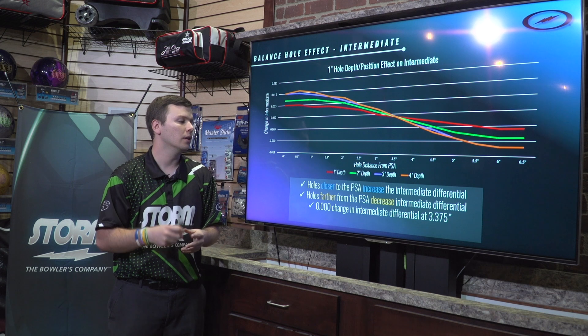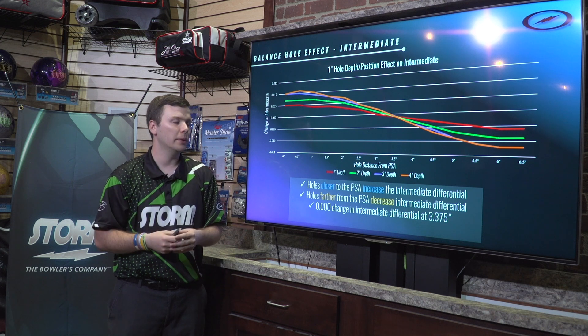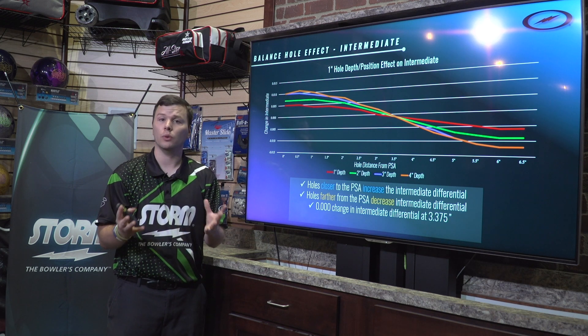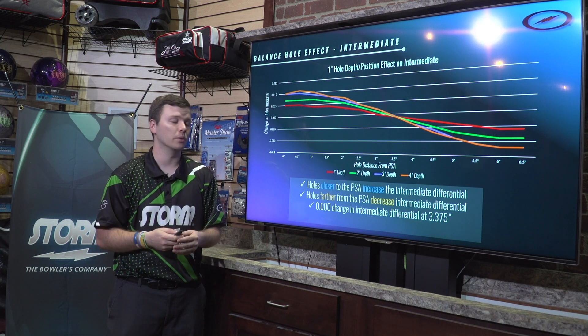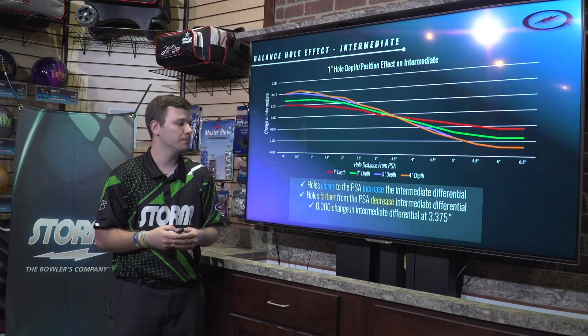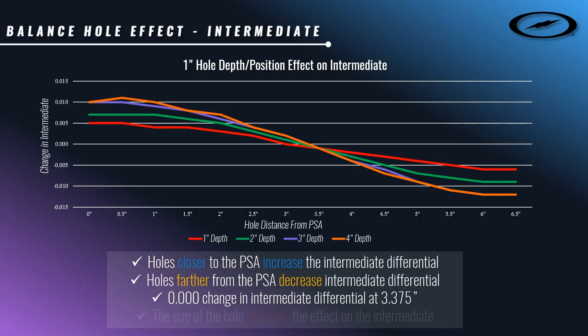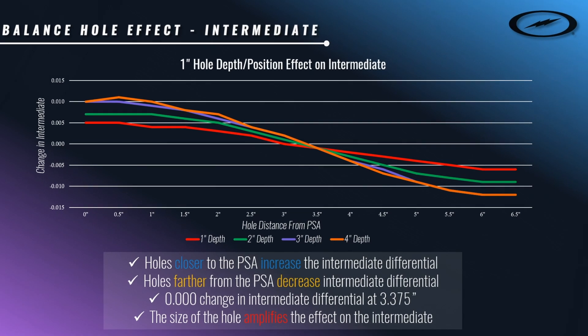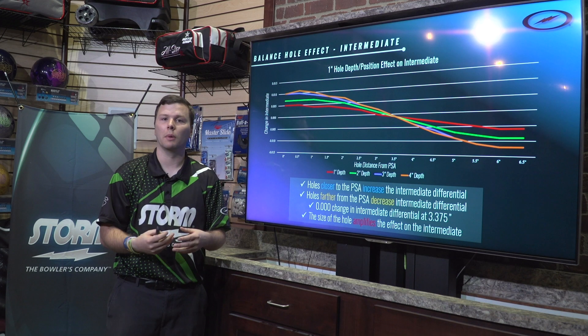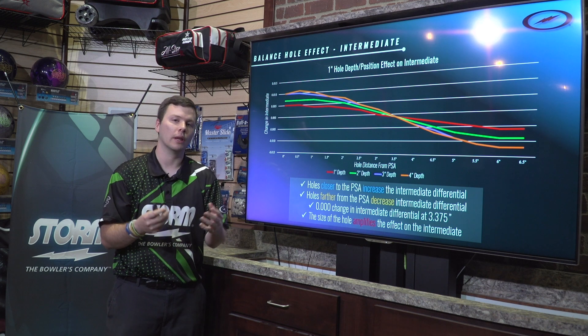Once again, you'll notice there's zero change in intermediate differential at three and three-eighths inches — same as total differential — just using the Y-axis and the Z-axis as our references. Three and three-eighths is exactly halfway between the two, so there's no change in intermediate differential, but you will see a change in the total RG of the bowling ball. Just like the other examples, the size of the hole is going to amplify the effect on intermediate: larger hole, bigger difference; smaller hole, less difference.